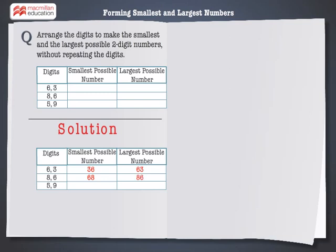Finally, let's solve the last problem. Here we have the digits 5 and 9. 5 is smaller than 9. To form the smallest number with 5 and 9, put the smaller digit in the tens place. So, the smallest number formed with the digits 5 and 9 is 59.